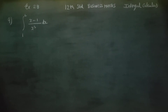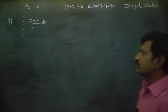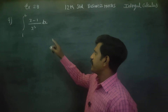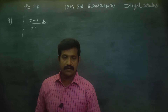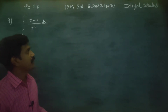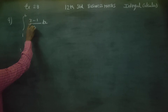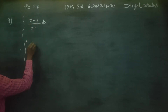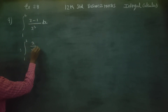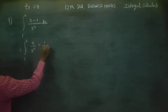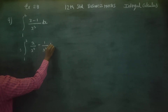Dear 12th standard business math students, using the Second Fundamental Theorem, you have to integrate from 1 to 2: (x minus 1) by x squared dx. Step number 1: split the denominator — x squared gives x by x squared minus 1 by x squared dx, which simplifies to 1 by x minus 1 by x squared dx.